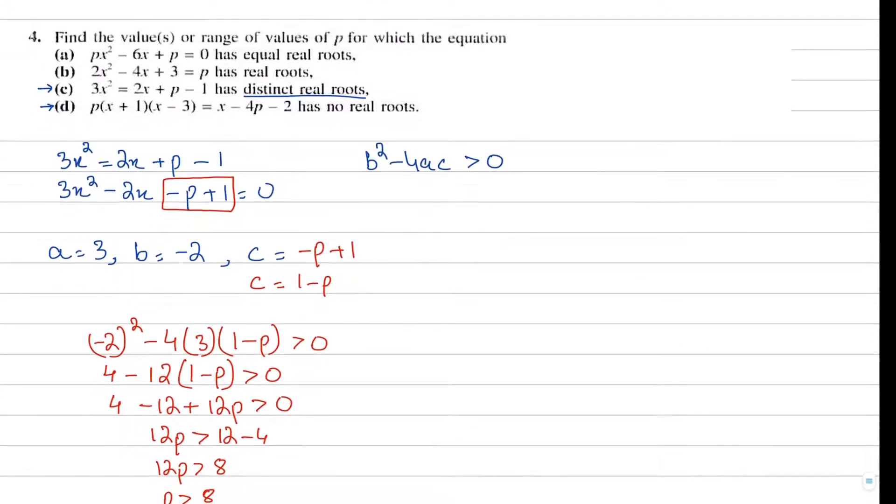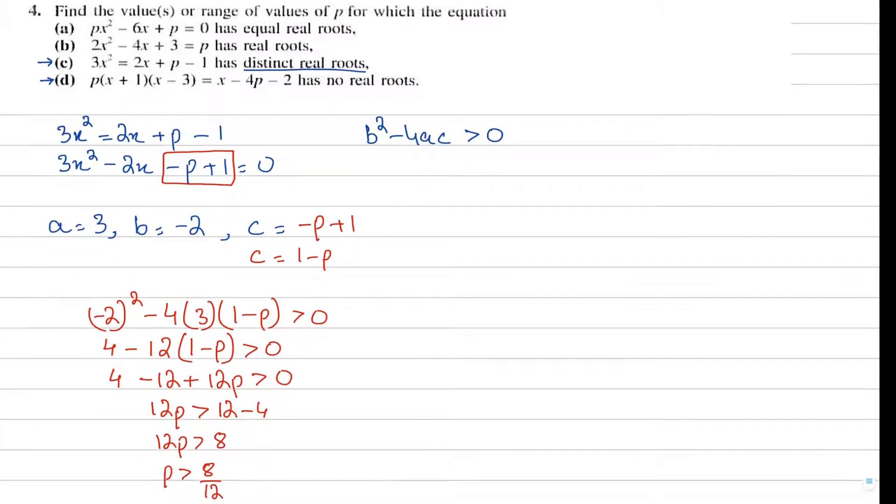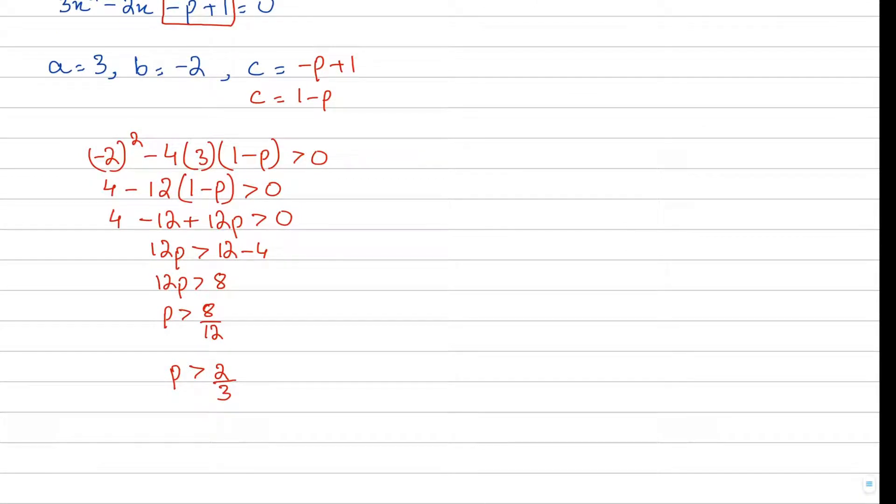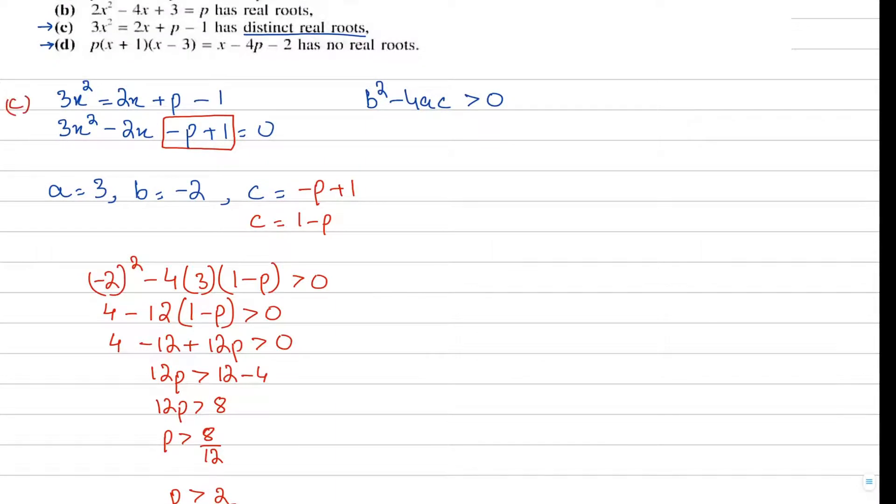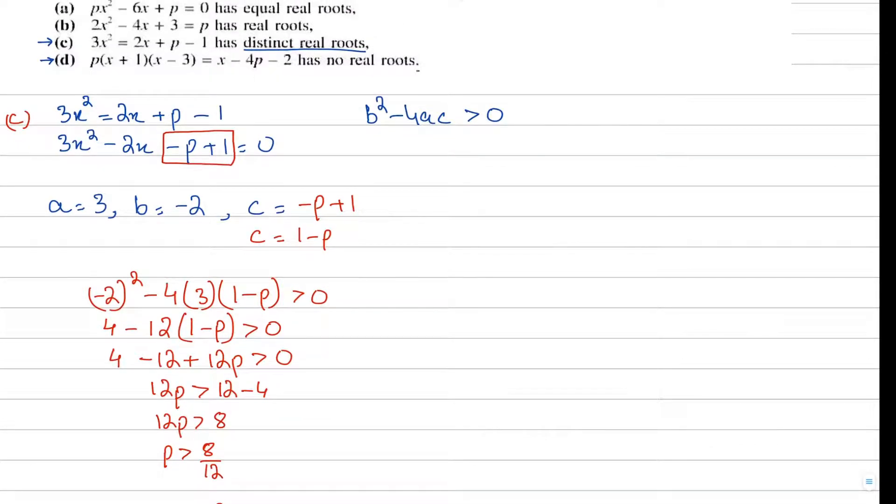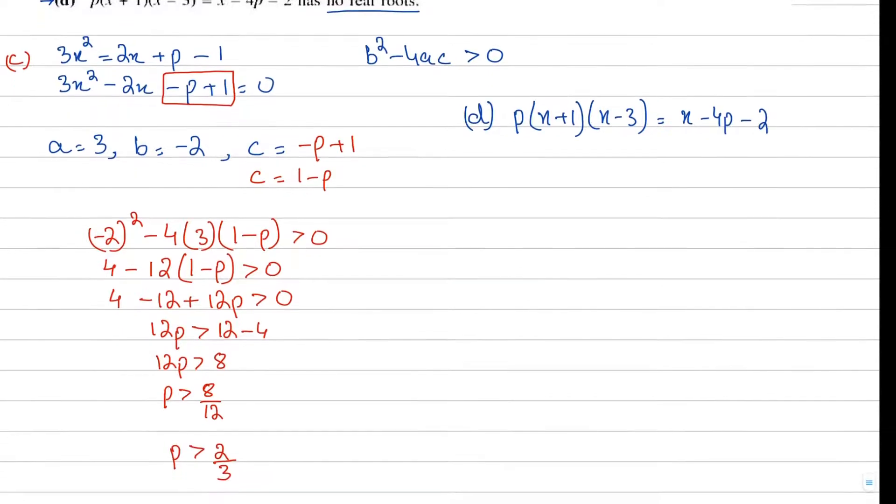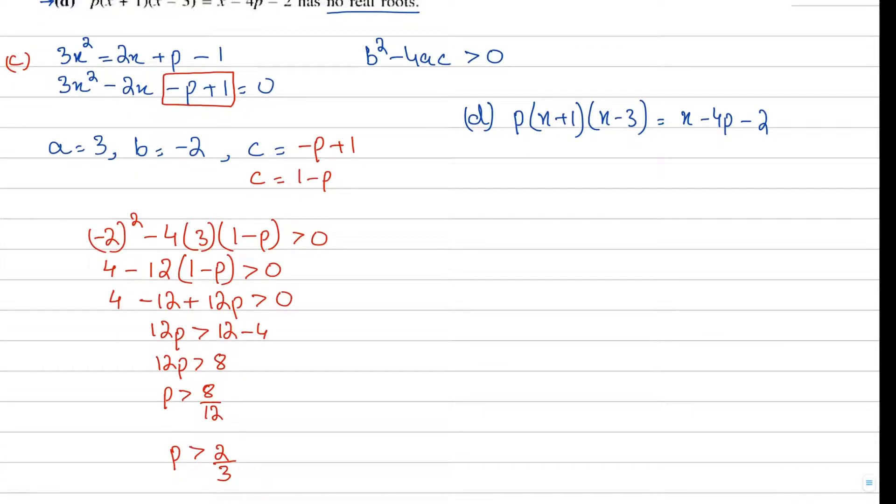p is greater than 8 upon 12, and when you simplify, it's 2 upon 3. That's exactly what the question was asking for - the range of values of p. Here we have p is greater than 2 upon 3. That's part c taken care of. Now I said I'll also solve part d.